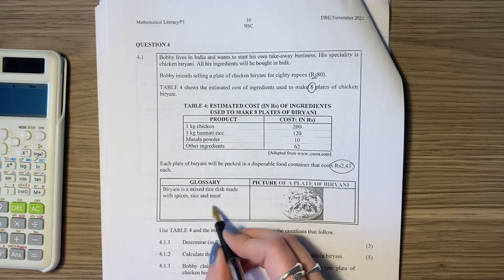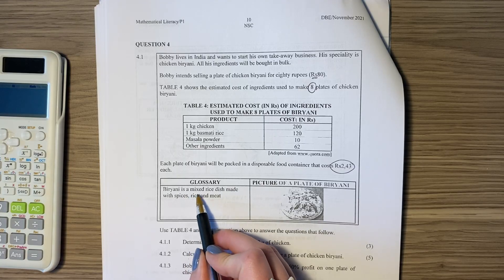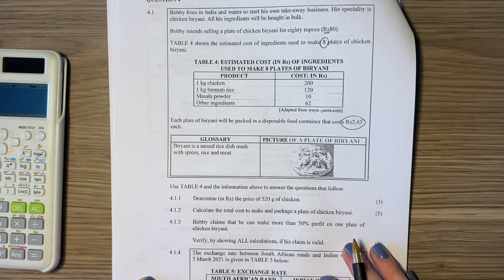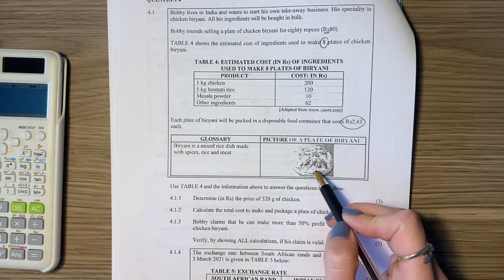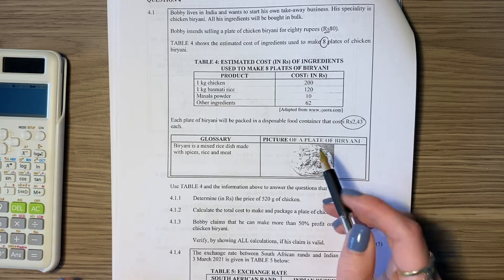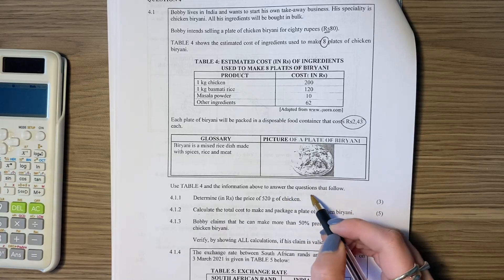Just to let you know what bryani is, it's delicious. Bryani is a mixed rice dish made with spices, rice and meat. If you haven't tried it, you should definitely. And there's a picture. My picture does not look very good, but it's because my print is not very good. Not because bryani is not very good. Then use Table 4 and the information above to answer the questions that follow.